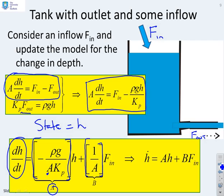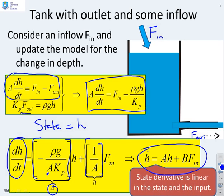The matrix B is given by 1 over cross-sectional area. We've now got a model in state space form where you see the derivative of the state is some matrix A times H plus some matrix B times the input. The state derivative is linear in the state and linear in the input.